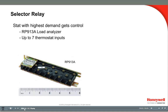Another selector relay is the RP-913A load analyzer. It selects the highest or lowest branch pressure input from zone thermostats. It will select the highest pressure demand in cooling applications or the lowest pressure demand in heating from up to seven thermostats, and pass this signal on to the heating or cooling device. Two load analyzers can be connected together to get 12 inputs. There is no calibration needed on the RP-913. The only service necessary is an air filter. If the output pressure is more than 1 psi below the input, the filter should be replaced. It uses the same filter as used on the thermostats, like the TP-970.